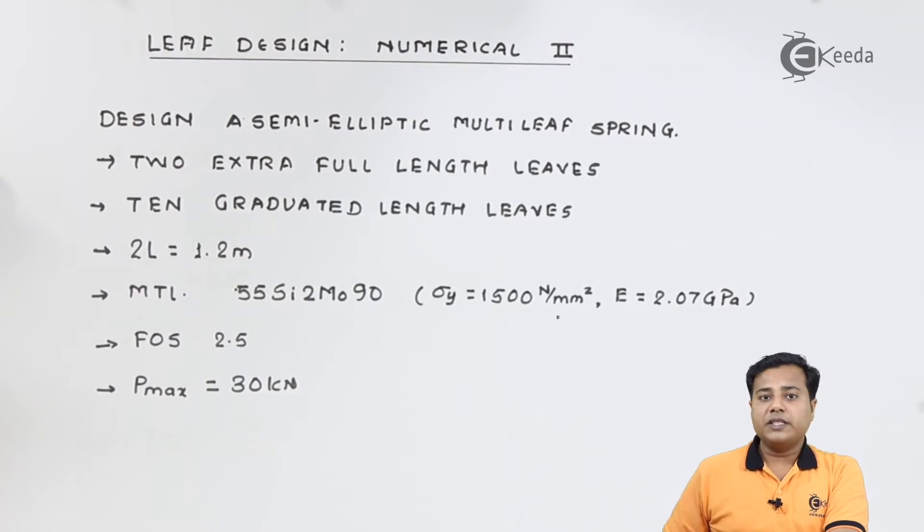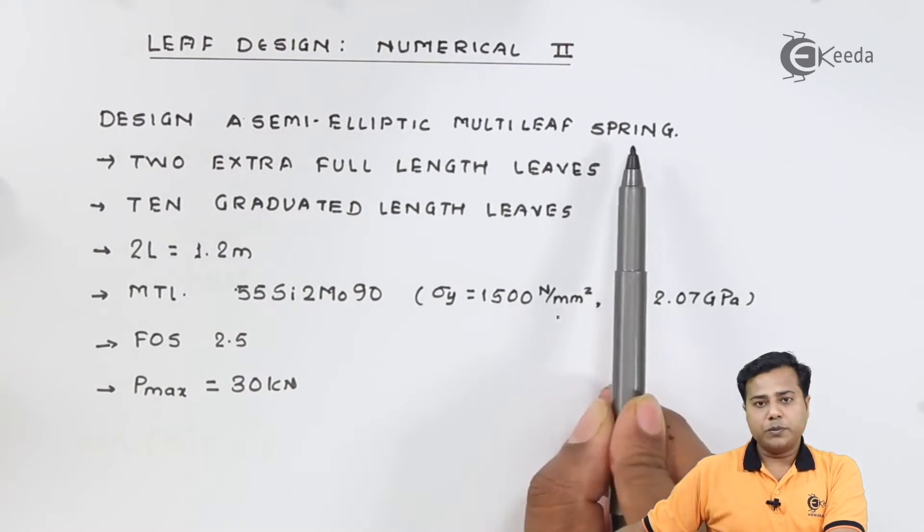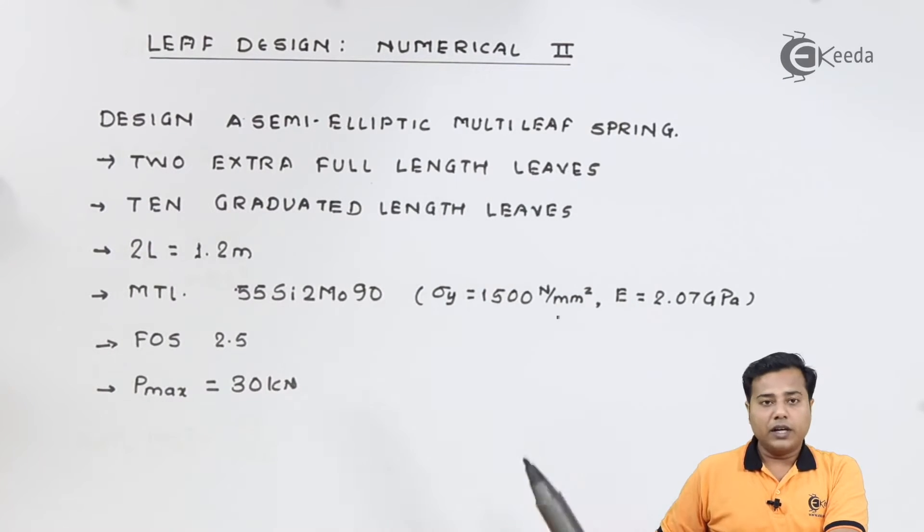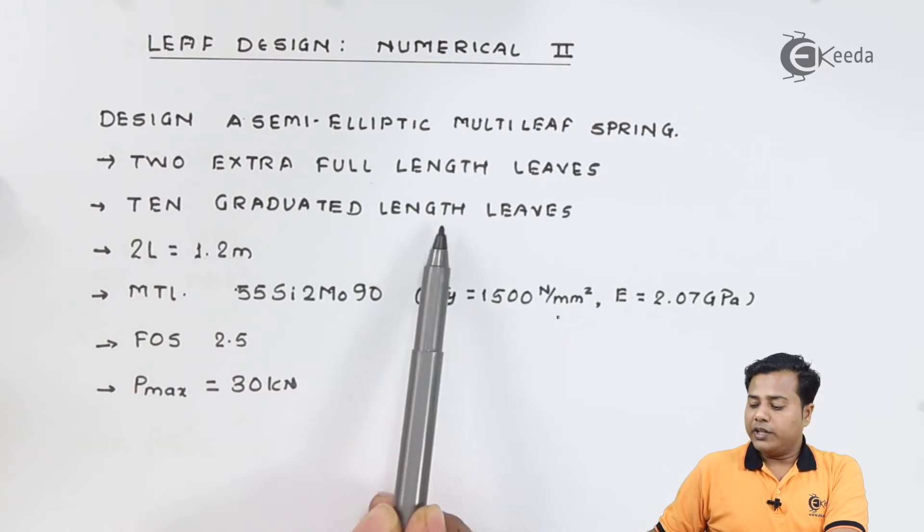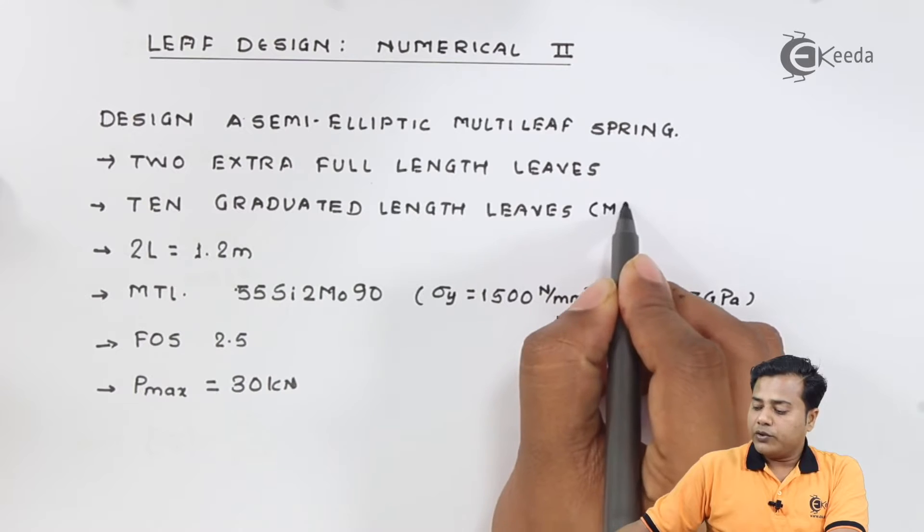The problem statement is there on the screen. It says design a semi-elliptical multi-leaf spring, where deflectors are given, 2 extra full length leaves are given, 10 graduated length leaves are given, where master leaf is also included.